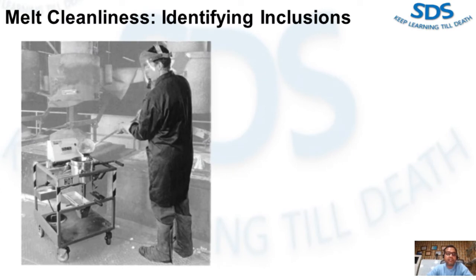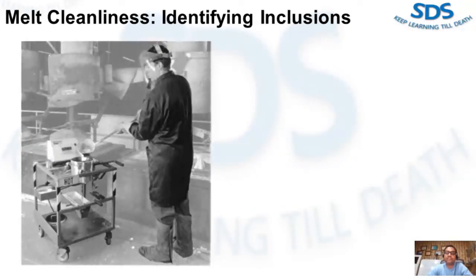To actually identify inclusions and not just their presence requires laborious laboratory preparation of metallographic samples. Careful microstructural evaluation is followed by techniques such as X-ray electron diffraction, scanning electron microscopy, or computerized analysis. Few die casters have these techniques available to them; however, there are a few shop floor techniques that are helpful.